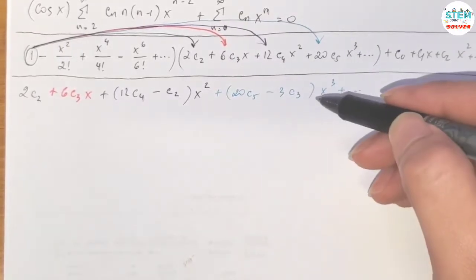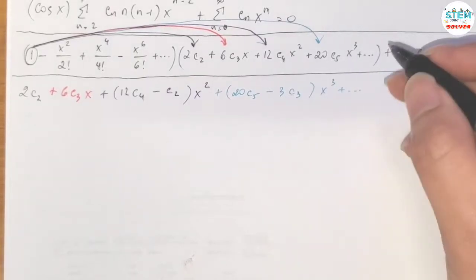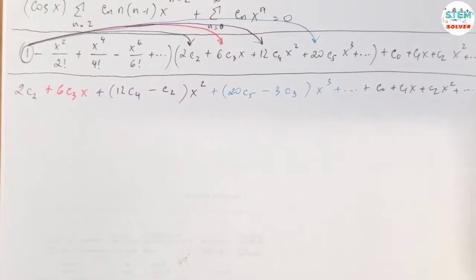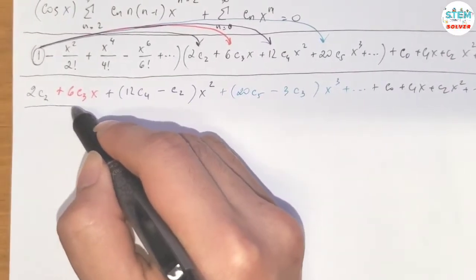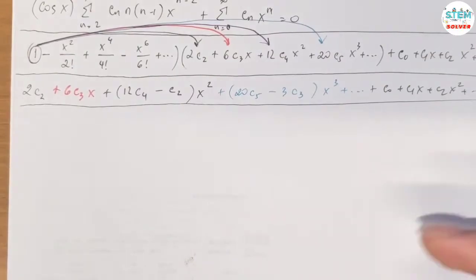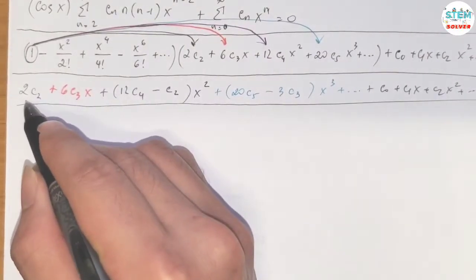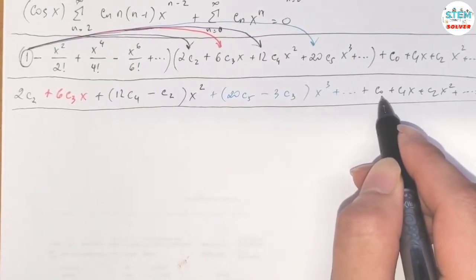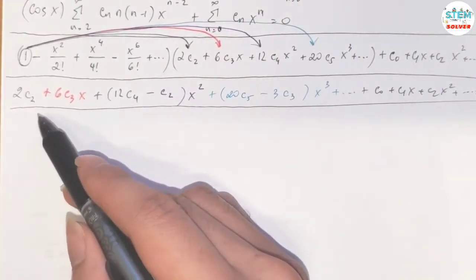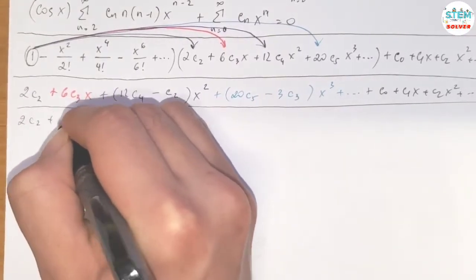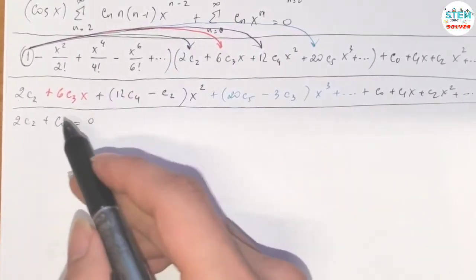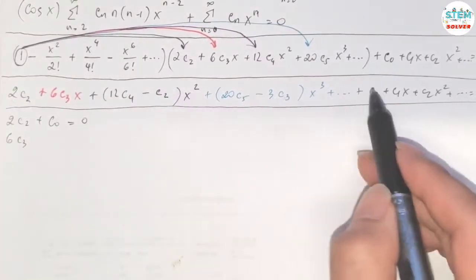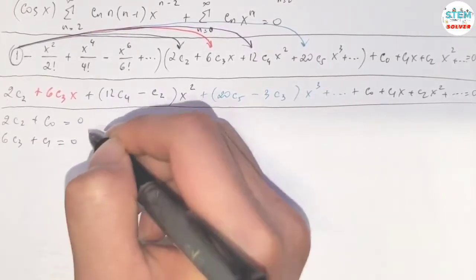For this one, just rewrite it. Now we are going to combine like terms. So constant, look at the constant first. I have 2c_2 plus c_0. I'm gonna combine like terms and equate coefficients at the same time. 2c_2 plus c_0 equals 0. Then look at the x term, so we have 6c_3 plus c_1 equals 0.